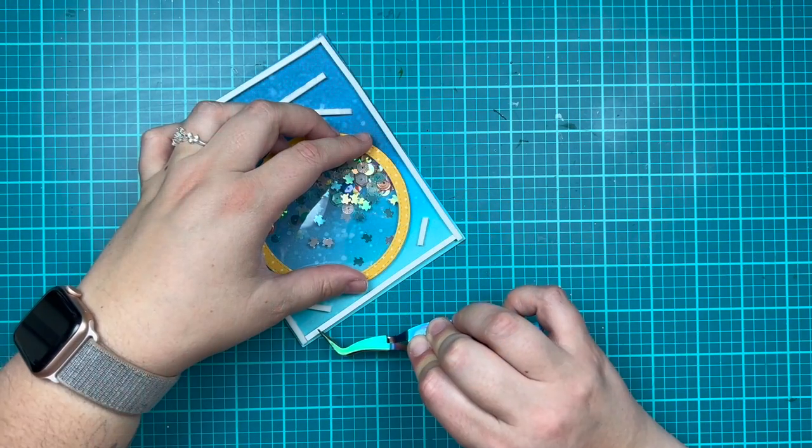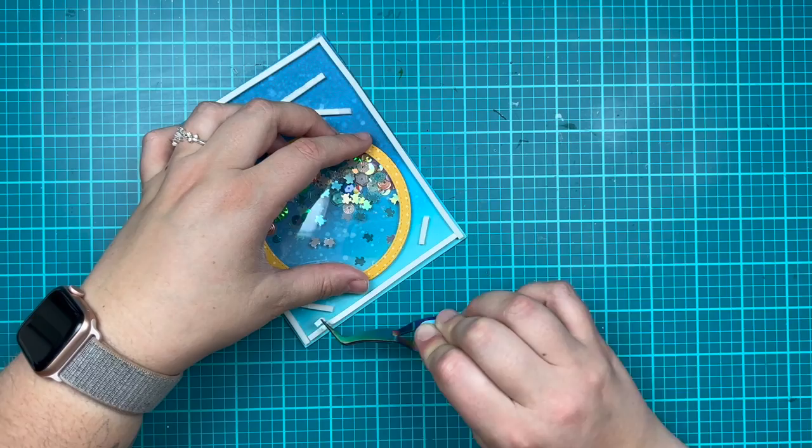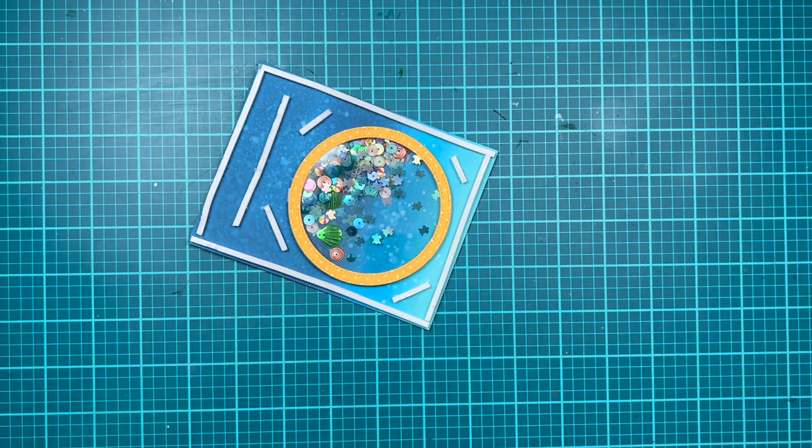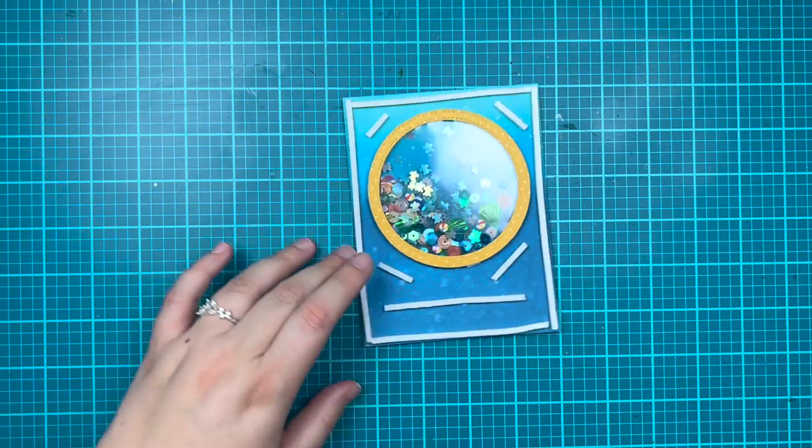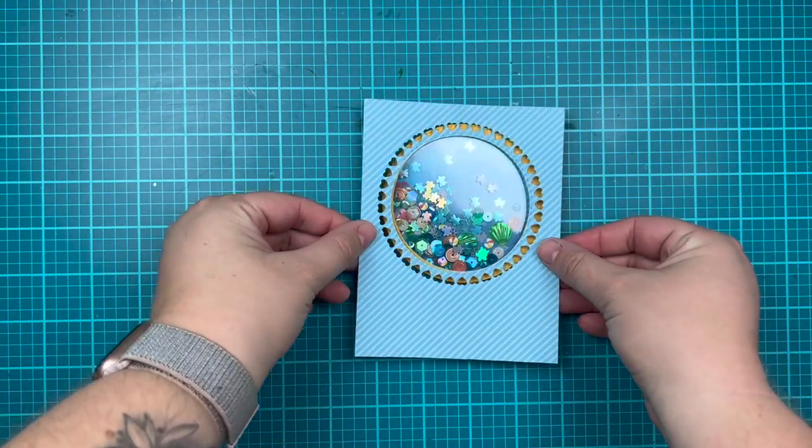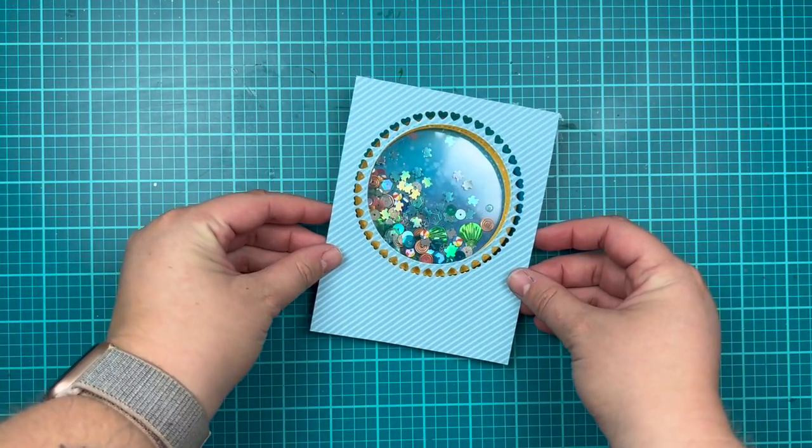So now I'm going to fill up the rest of my background with some foam adhesive. That's the same thickness as my shaker and then I am going to adhere now the blue pattern paper to the front of my card.